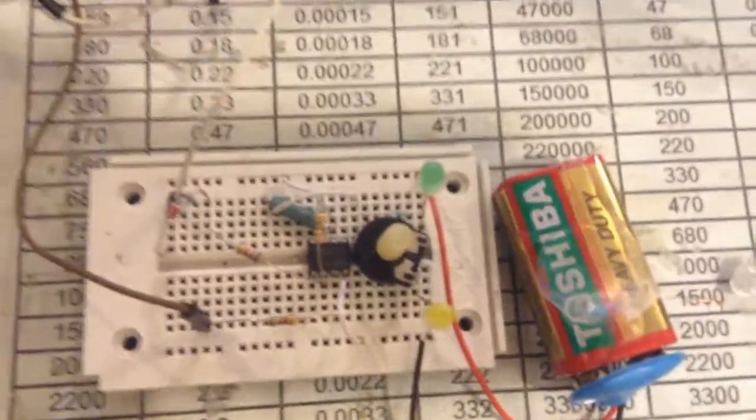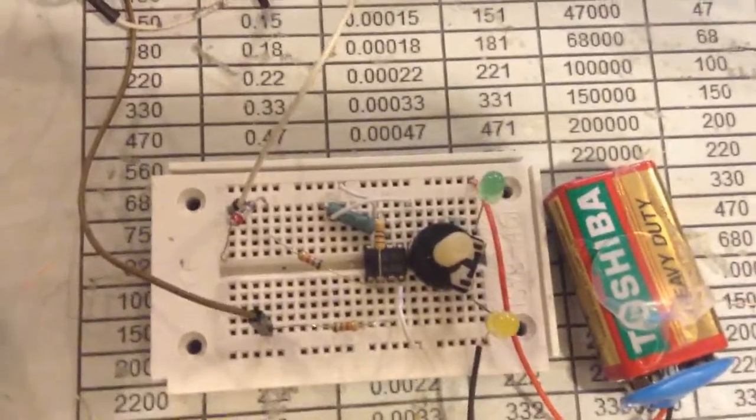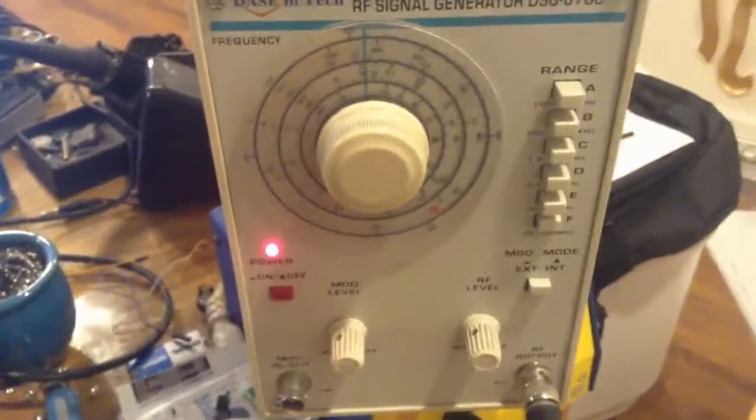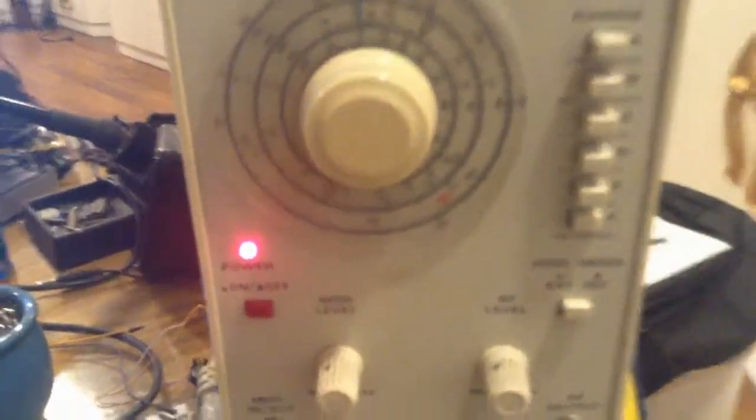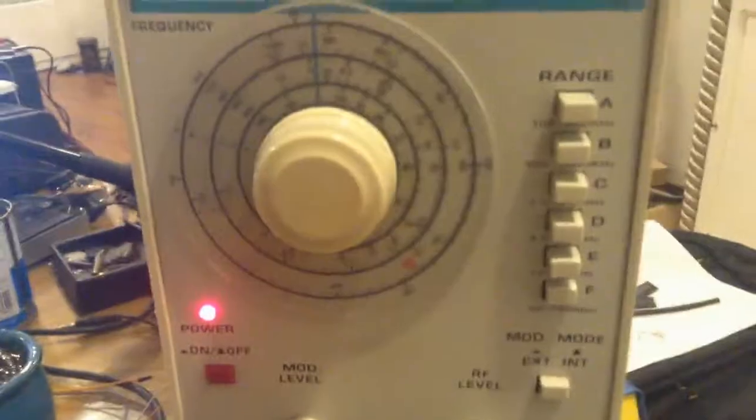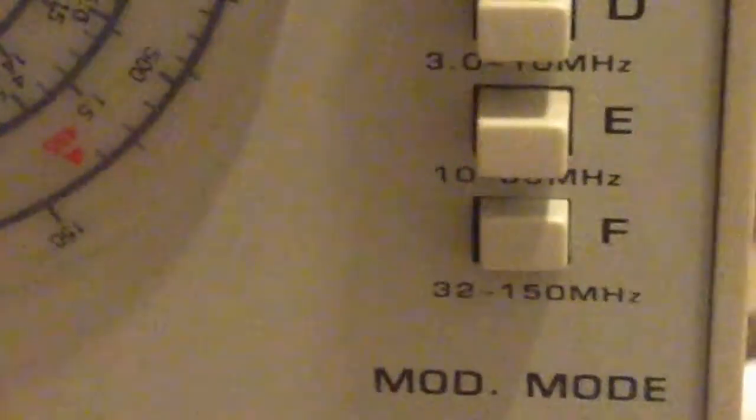This is my project. You can see it is connected to the frequency generator. I have one modulated frequency generator here. It's an old one but working pretty well. This side is the FM frequency, 32 up to 150 megahertz. It's good enough to test this device.